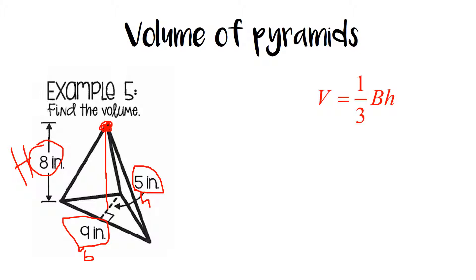So when we find the area of that base, we're going to take 9 times 5 times 1 half. So it's going to be 22.5 times the overall height, which is 8, all times one-third, for a final answer of 60 inches cubed.